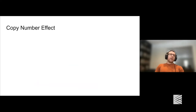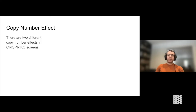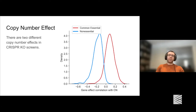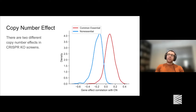Turning to the copy number effect—there are actually two different versions. The one everyone knows: if you target a non-essential gene or intergenic region that happens to be highly amplified, you get more depletion, leading to a negative correlation between gene effect and copy number for all non-essential genes. The complication is that for an essential gene you get the opposite correlation—more amplified regions yield a higher gene effect score. This bifurcated copy number effect obviously complicates our efforts to correct it. The first version largely goes away with CRISPRi, but the second version—essential genes becoming more positively correlated with copy number—actually becomes much worse with CRISPRi, which is one reason CRISPRi is not a slam-dunk solution.